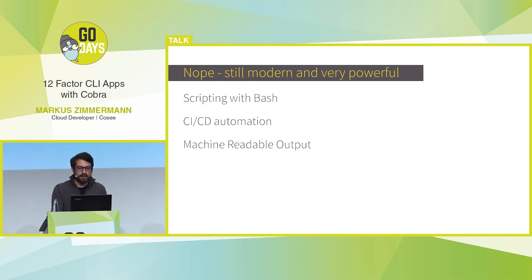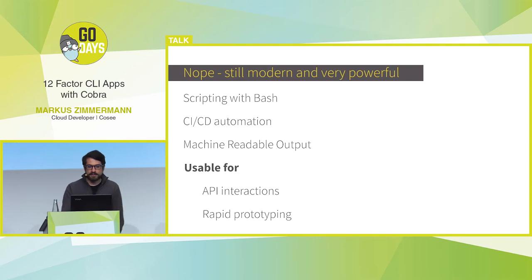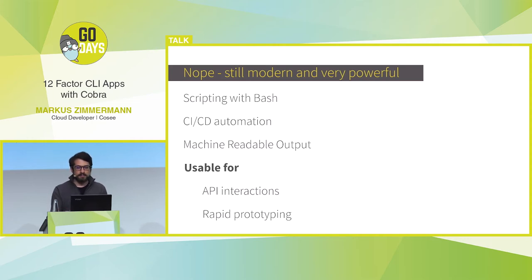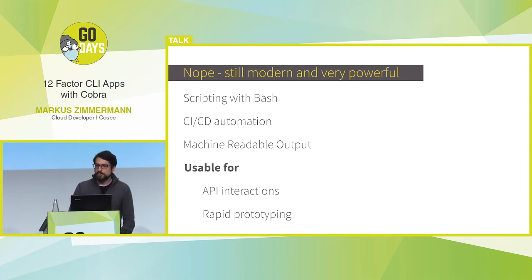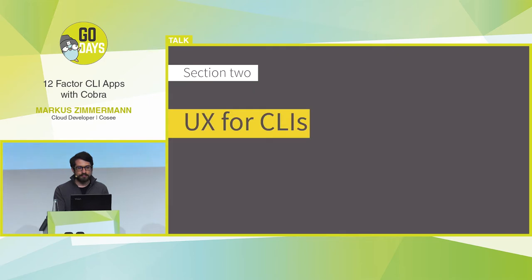If you do your own continuous integration pipeline, you always use some sorts of CLIs. The great thing is that a good CLI always has machine-readable output which you can continue to work with. The whole Unix tooling is based on the pipe principle, and it's really good for rapid prototyping — for example, if you need to write something for a REST API. With a CLI you can get much done with the smallest amount of code.